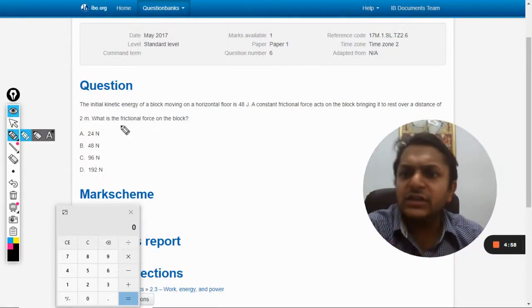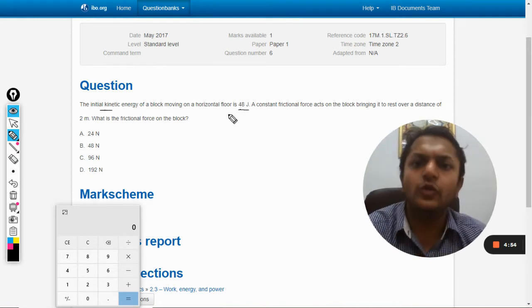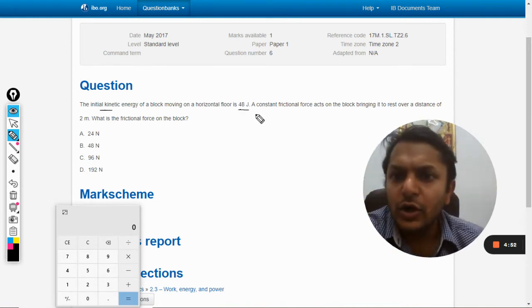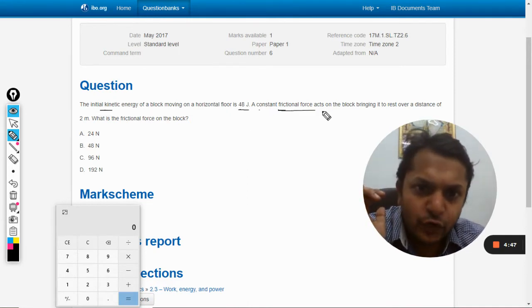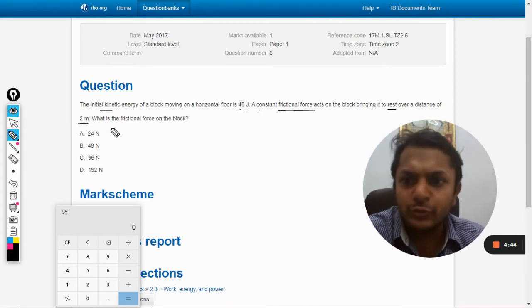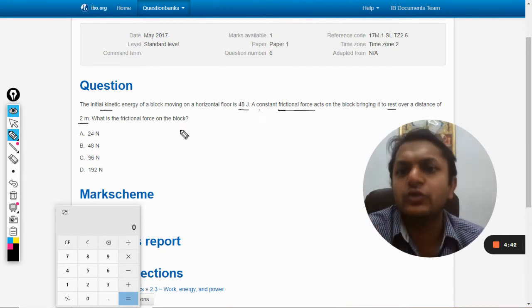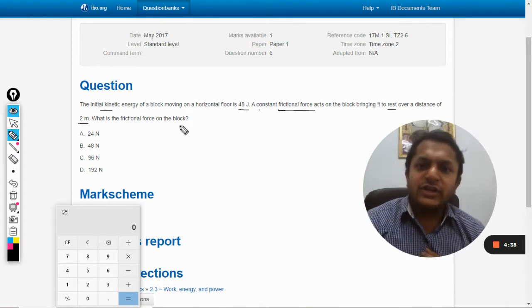In this question, the initial kinetic energy of a block moving on a horizontal floor is 48 joules. A constant frictional force acts on the block, bringing it to rest over a distance of 2 meters. What is the frictional force acting on the block?